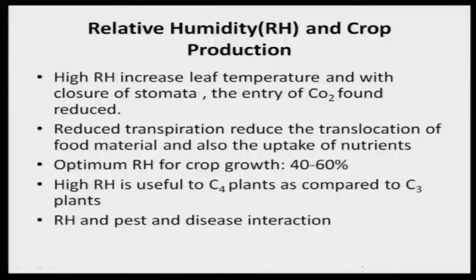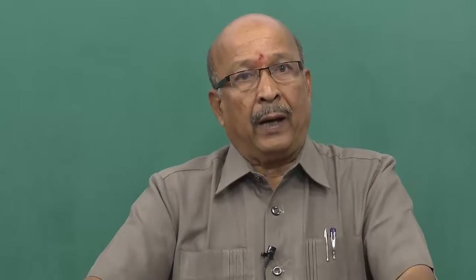Relative humidity is important to crop production. Relative humidity varies from 0 to 100 percent, though zero does not normally occur — it typically ranges from 20 to 100 percent based on geographical position. For example, at a coastal station, morning RH would always be near 100 percent because water vapor is enhanced by sea water proximity. When RH is high, around 90 percent, leaf temperature increases, stomata close, and entry of carbon dioxide is reduced.